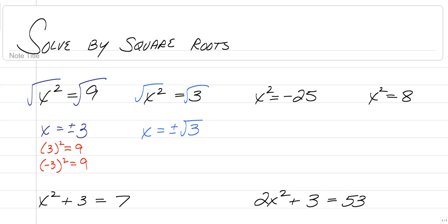Next example: the square root of negative 25. In the last video, you learned how to take the square root of a negative. So this would just give us x is equal to plus or minus 5i, because now we can work with imaginary numbers.